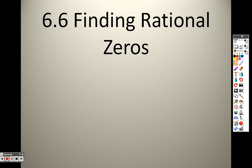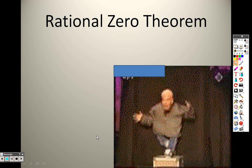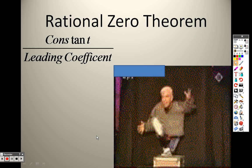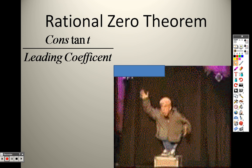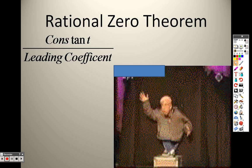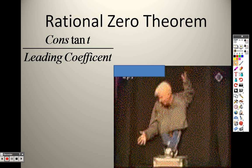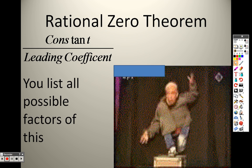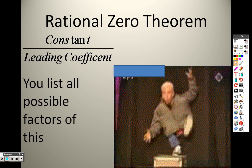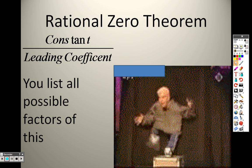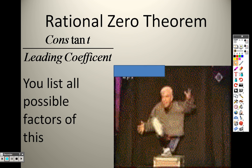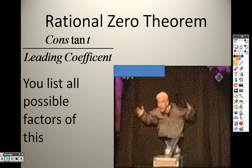6.6 finding rational zeros. A rational zero theorem basically is saying you take the constant term in your polynomial and you divide it by the leading coefficient. And we're trying to find all the different factors that there are for each of those. You list all possible factors. This can get tedious and time-consuming. The main reason you're doing this is because you don't know what divides into the polynomial, so you're trying to figure out what the answer is.